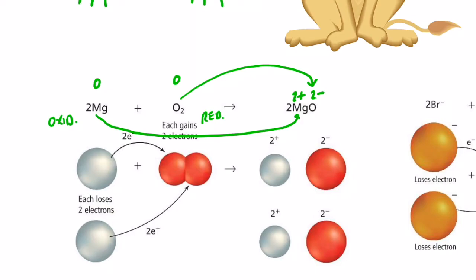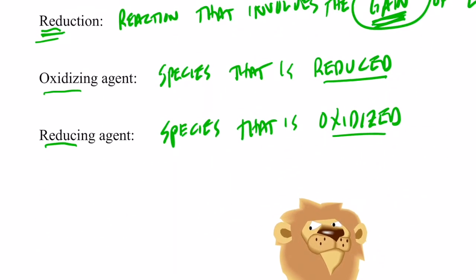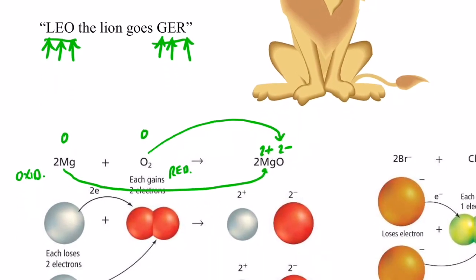Now, how was the oxygen reduced? Well, it had to gain electrons from somebody and it gained those electrons from magnesium. Magnesium was oxidized because it lost the electrons to oxygen. It turns out that oxygen was the oxidizing agent in this reaction. Let's look at the definition for oxidizing agent to see if we can help us understand this a bit better. The oxidizing agent is the species that is reduced.